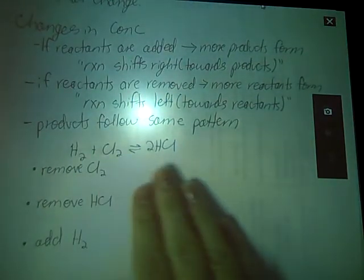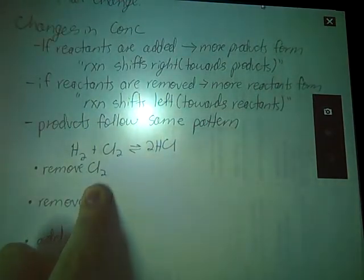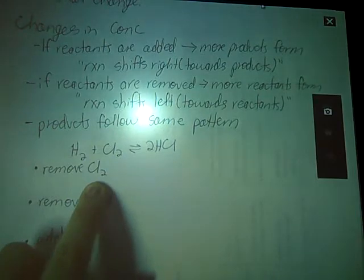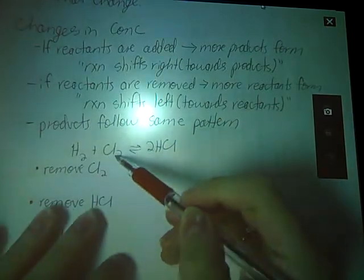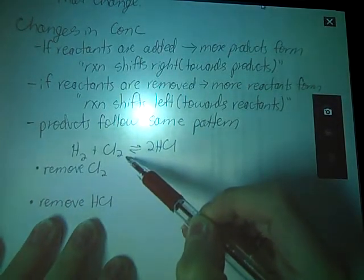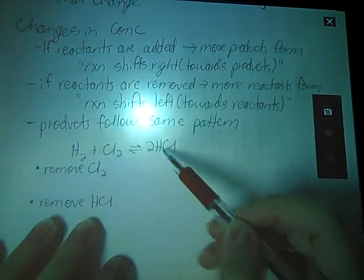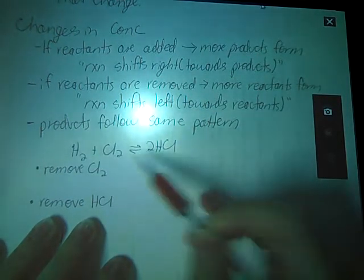Let's say I have this reaction, and these are all in gaseous form. So hydrogen gas reacts with chlorine gas to produce hydrochloric acid in gaseous form. Excuse me while I get a drink of water. If I were to remove my HCl, to take some of this out, my reaction is going to shift towards that hole, towards this gap here. We're going to make more products.